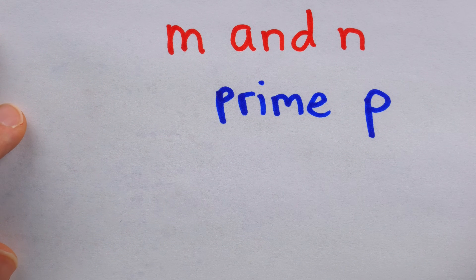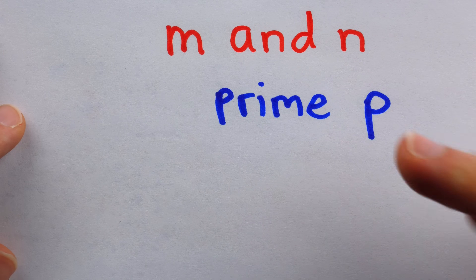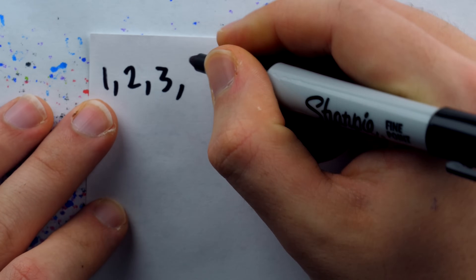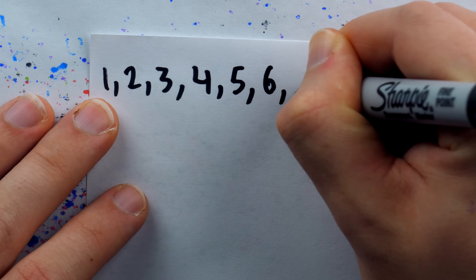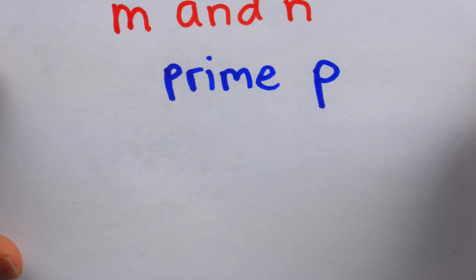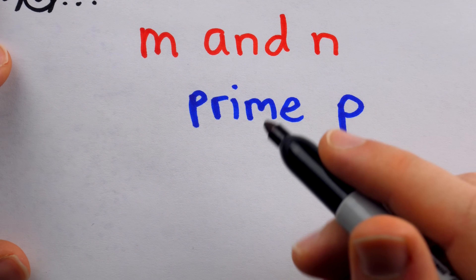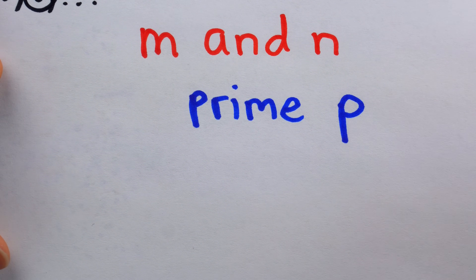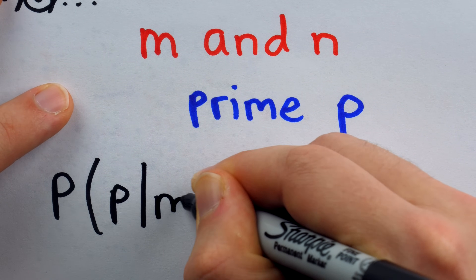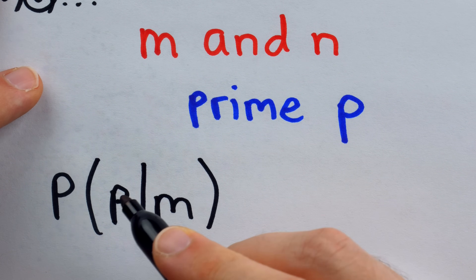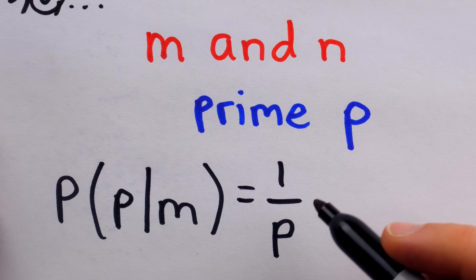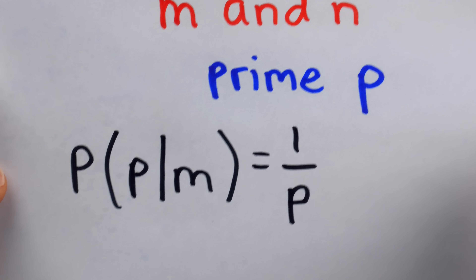When you think about the sequence of all positive integers, every pth integer would be a multiple of p. For example, if p is the prime number three, every third number is a multiple of three: one, two, three, one, two, three, and so on. So one-third of all integers are divisible by three. In general, one out of every p integers will be divisible by a prime number p. So the probability that prime p divides m is 1 over p, and by the same logic, the probability that p divides n is also 1 over p.